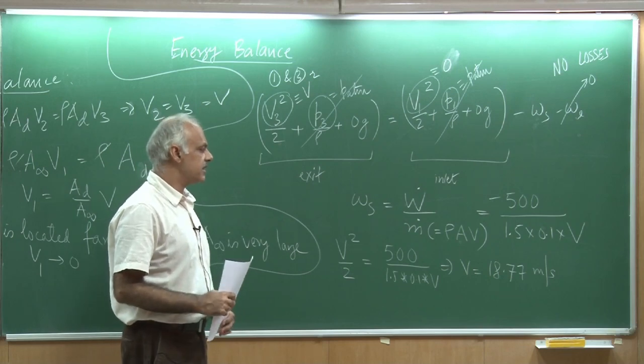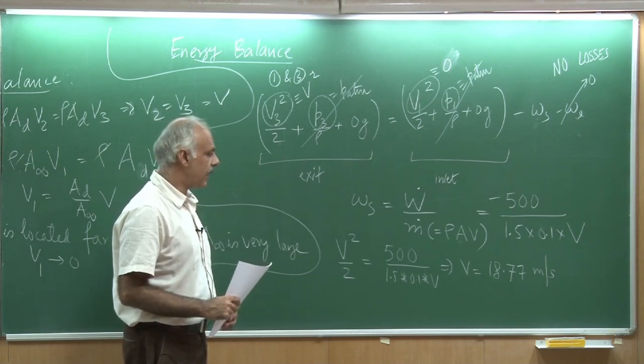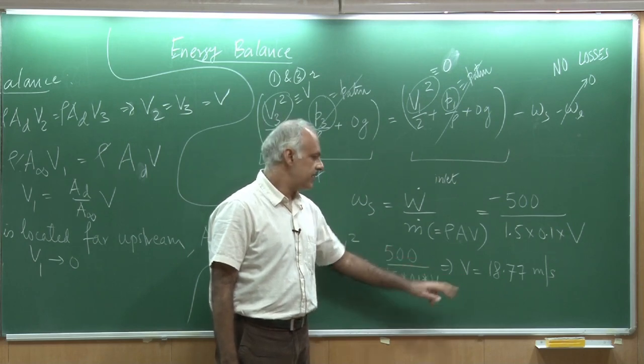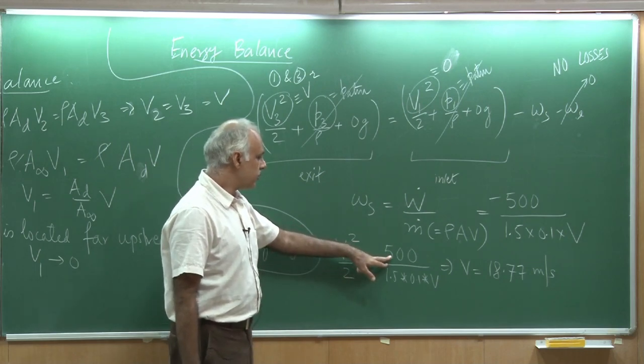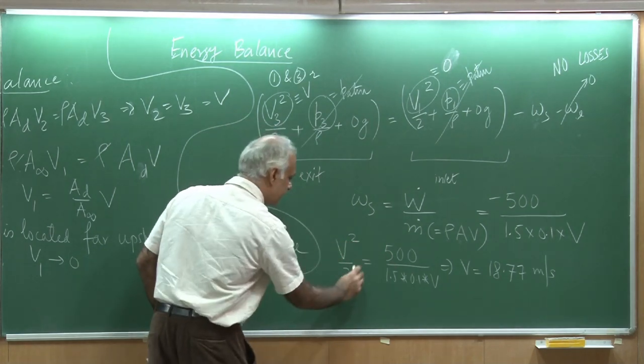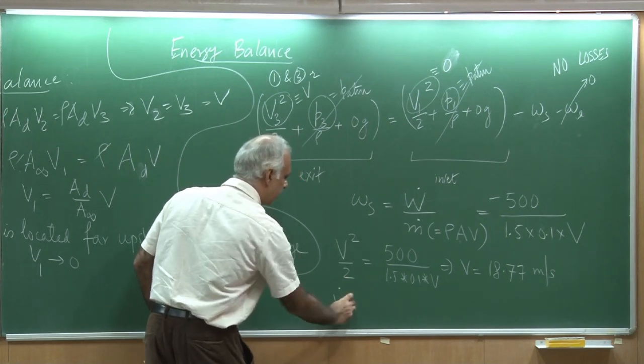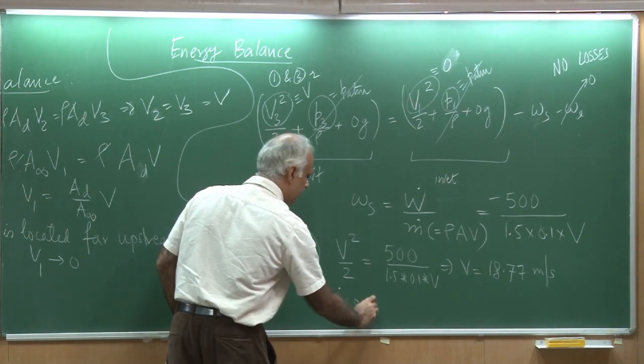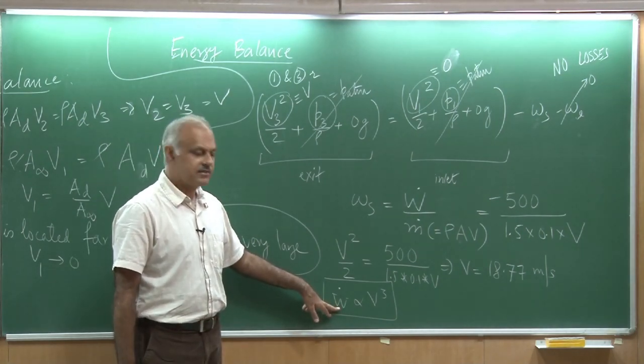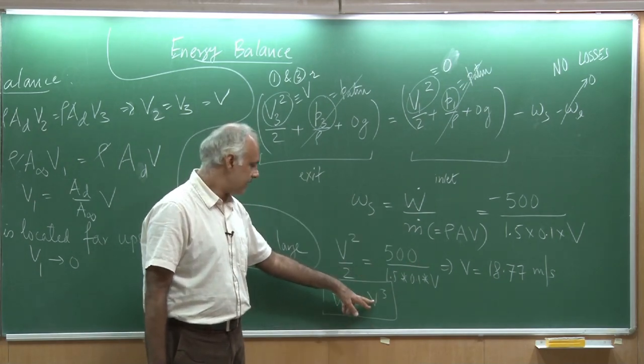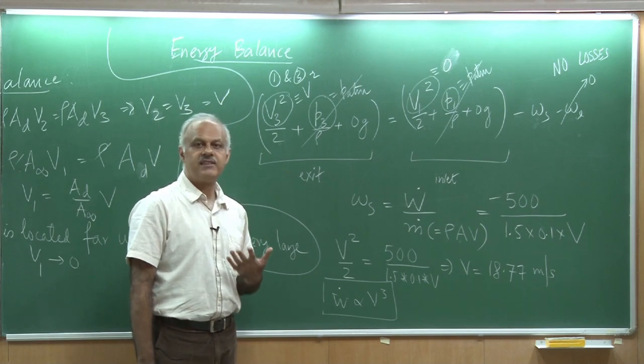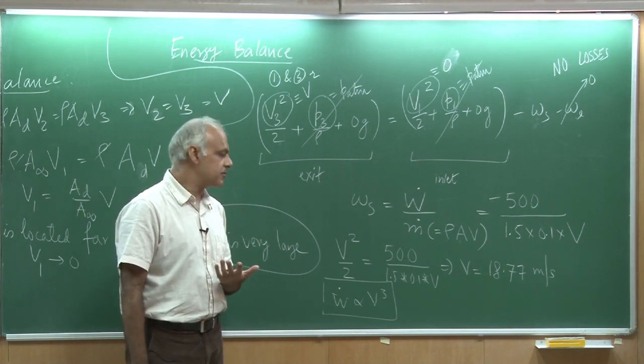If I install half a kilowatt fan and it consumes the entire power and I assume there are no losses, that is the speed I would get inside the duct. As you can see, W dot actually is proportional to V cube. If I simplify this equation, you would be able to see that W dot, the work done, is actually proportional to V cube. If I double the wattage, it is not that I am going to get double the speed. The thumb rule is that drag is proportional to velocity square and power is proportional to velocity cube.